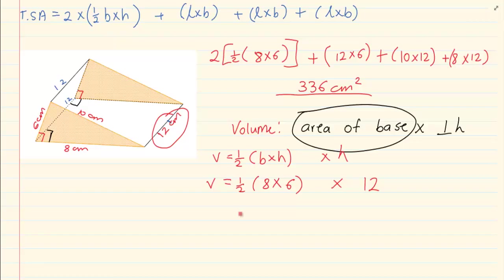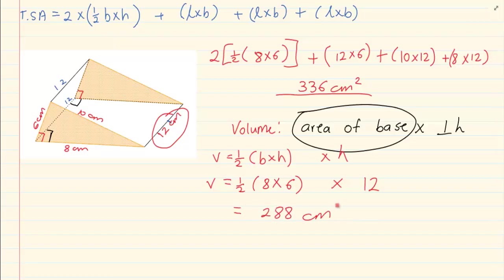Which is equal to 288 cm³. I write centimeter cubed because it is a volume. Thank you for watching.